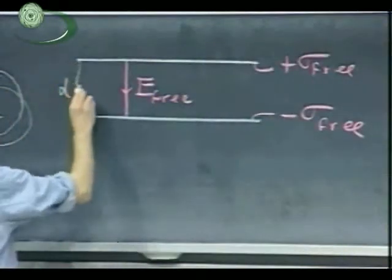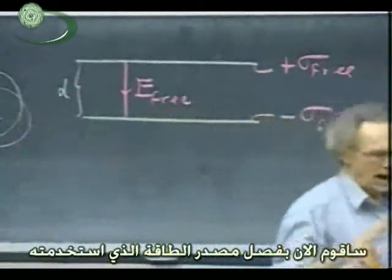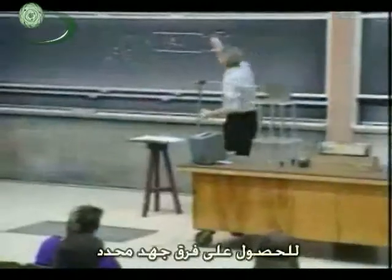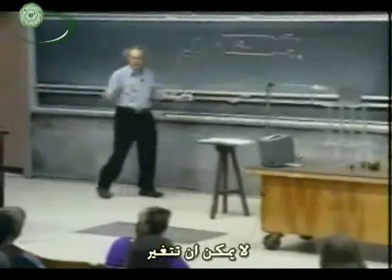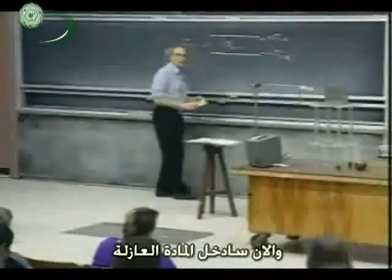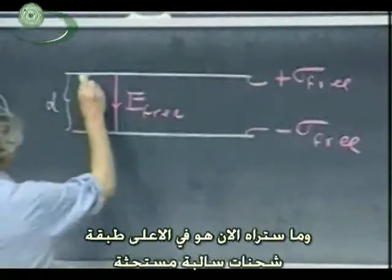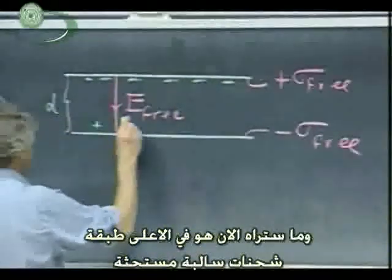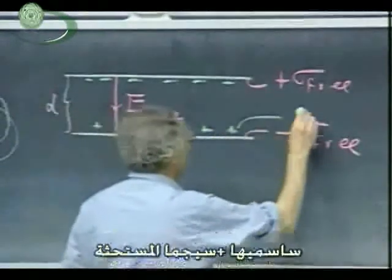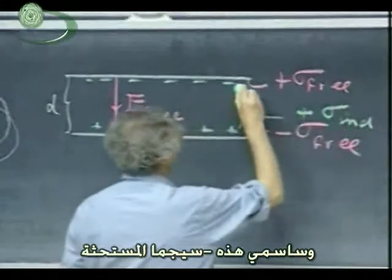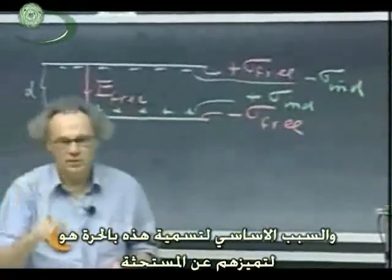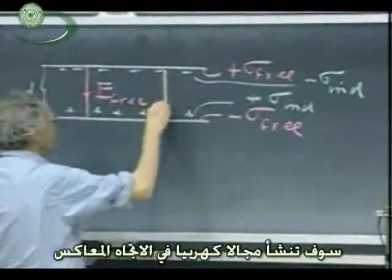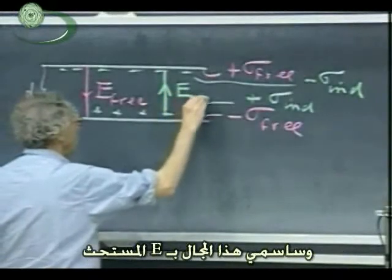The distance between the plates is D. I now remove the power supply that I used to give it a certain potential difference — I completely take it away. That means the charge here is trapped and cannot change. But now I move in a dielectric — one of those substances. What you're going to see is at the top a negative induced layer, and at the bottom a positive induced layer. I call it plus sigma induced and minus sigma induced. The only reason I call the other 'free' is to distinguish it from the induced charge. This induced charge will produce an electric field in the opposite direction, and I call that E induced.